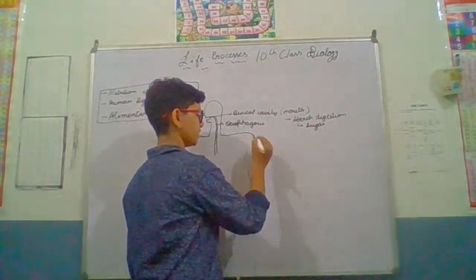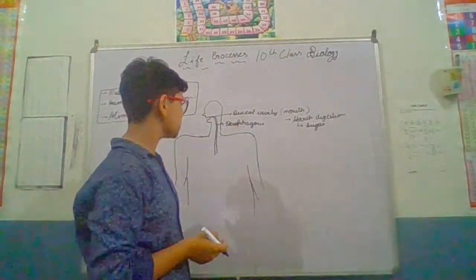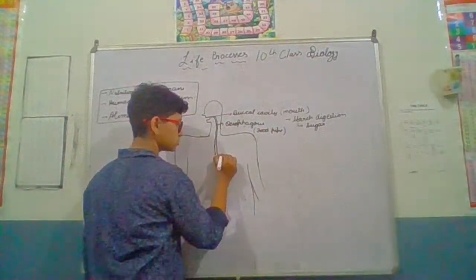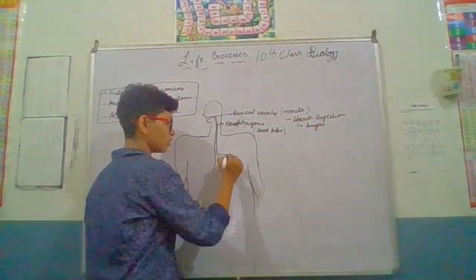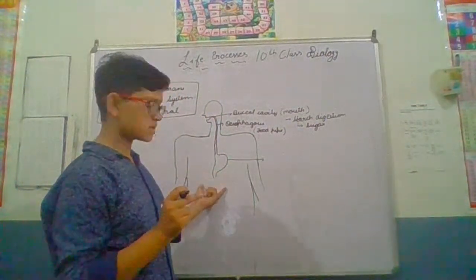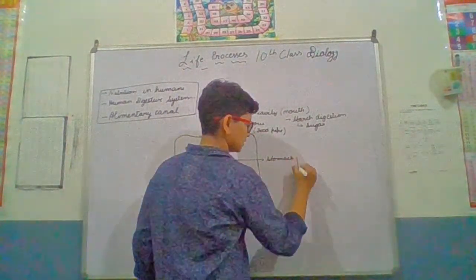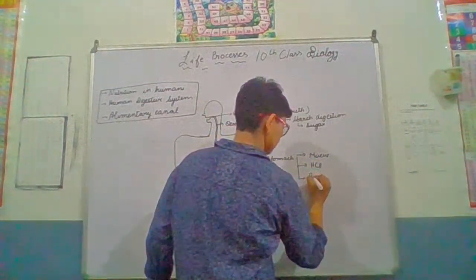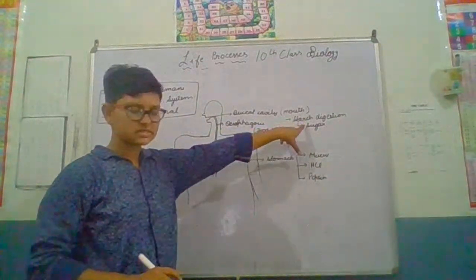The function of the esophagus, the food pipe, is to transport the food towards the stomach. The stomach is also a digestive agent in the digestive system. The stomach contains three enzymes: mucus, HCl, and Pepsin. HCl is also known as hydrochloric acid. In the buccal cavity, starch is digested and broken down into sugar, then the food reaches the stomach via the esophagus.